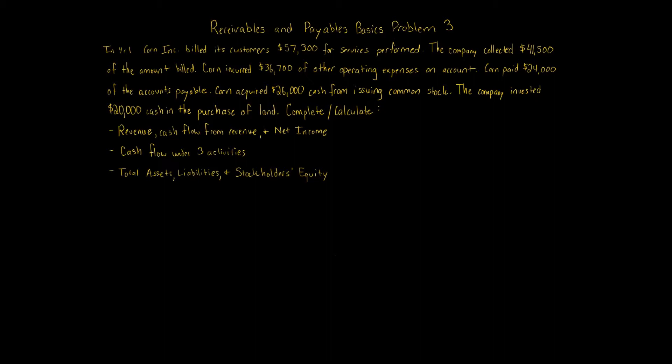We need to find: revenue, cash flow from revenue, and net income; cash flow under the three activities — operating, investing, and financing; and the total assets, total liabilities, and total stockholders' equity. The best thing to do is determine these transactions based on the accounting equation: assets equals liabilities plus owner's equity.